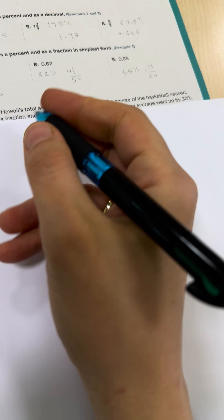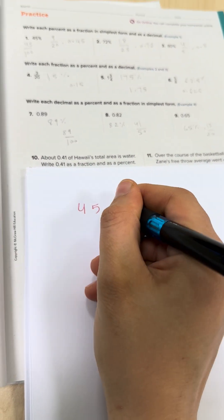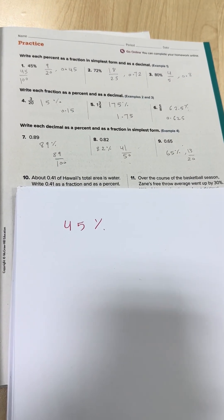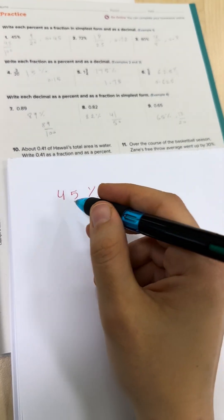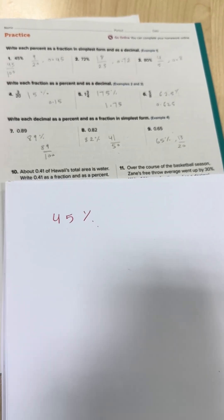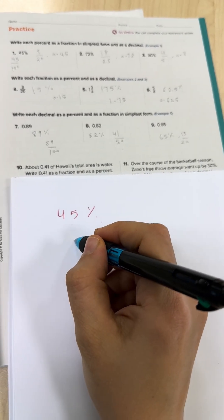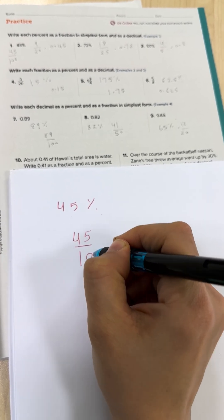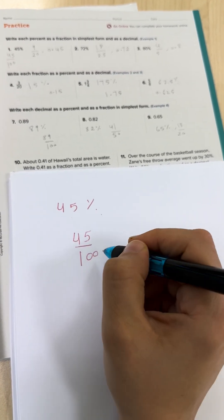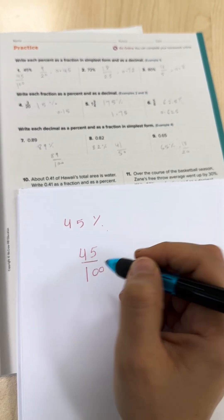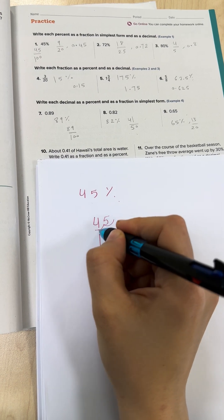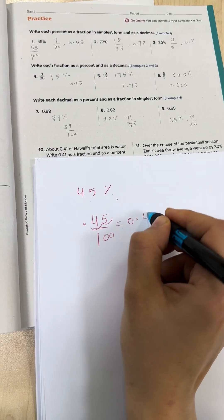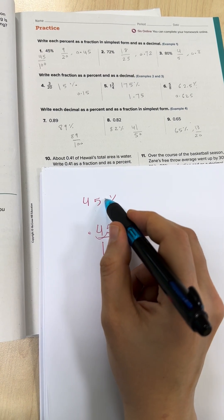Question one: 45 percent. Write each percent as a fraction in simplest form and as a decimal. So as a fraction it is 45 over 100. For the decimal, how many zeros? We have two, so move the decimal point to the left two steps: one, two — so 0.45. Percent, fraction, decimal.